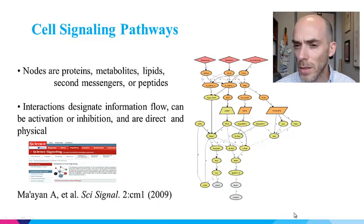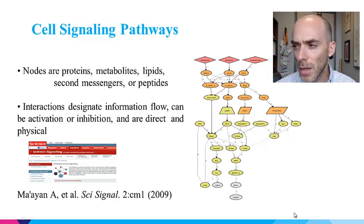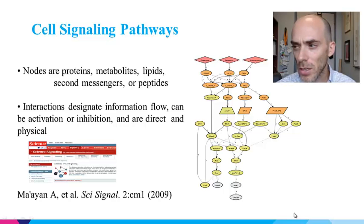Cell signaling pathways are commonly represented as signed mixed graphs where nodes are mostly proteins, but can also be metabolites, lipids, second messengers, or peptides. Interactions designate information flow and can be activation or inhibition. Most such interactions are direct physical interactions, typically enzymatic or binding.